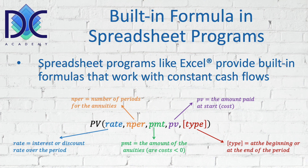The second parameter is nper — the number of periods. Then we have pmt, which is the periodic cash flow amount of the investment. There is also pv, which represents an amount paid at the beginning — an initial investment. Finally, the type parameter is zero or one, depending on whether the payment is made at the beginning or end of the period. Typically we use zero, meaning payment at the end of the period.